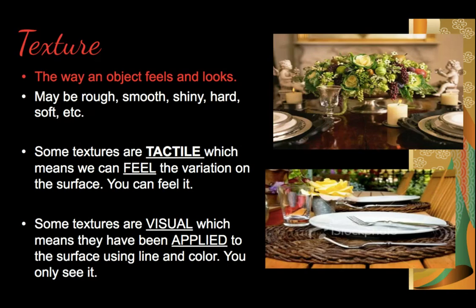Texture is the way an object feels and looks. We can describe it as rough, smooth, shiny, hard, soft, etc. There are two different kinds. Some textures are tactile, which means we can feel the variation on the surface — you can actually feel whether it's rough, smooth, or soft. Some textures are visual, which means they have been applied to the surface using line, color, or pattern, but you only see it — you can't actually feel it when you run your fingers over the surface.